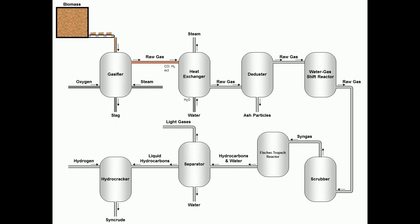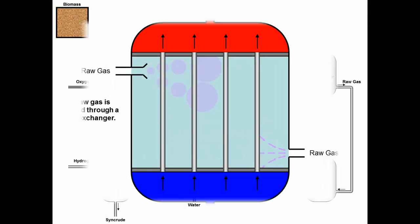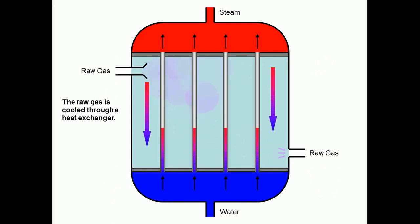Then the raw gas is sent into a heat exchanger. In the exchanger, raw gas is cooled down by counter-flow cold water. At the same time, steam is generated from water.